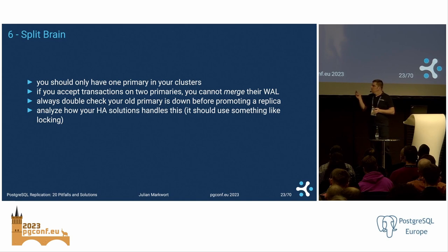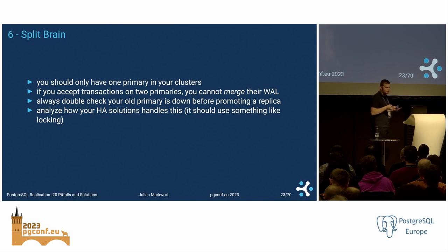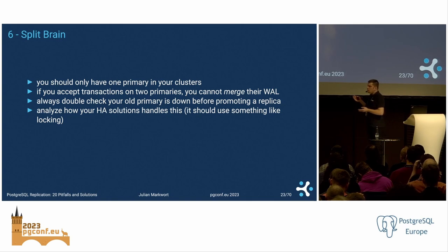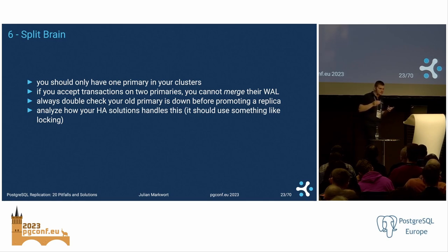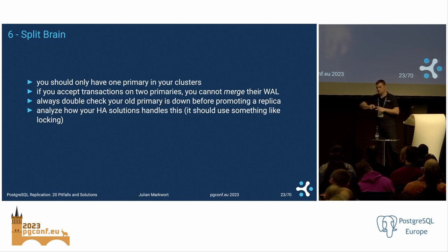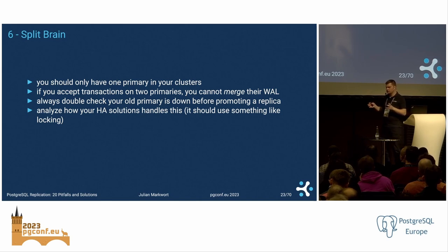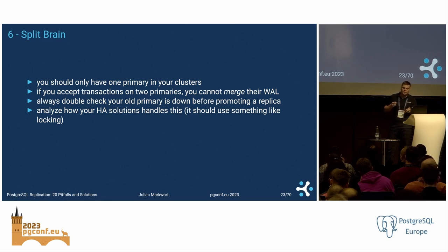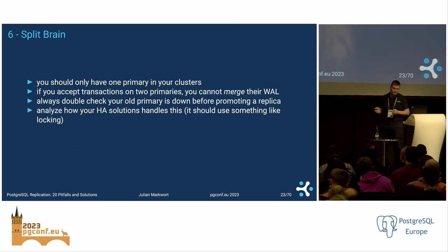You need to double-check that your primary is down before you promote your replica. Just because you cannot see the primary — because it's partitioned off in a data center — does not mean it's not still running as a primary and accepting local changes. Your high availability manager should use something like locking backed by a quorum: you can only promote if you acquire that lock, and any primary that loses or fails to extend its lease on the lock should shoot down the PostgreSQL instance to prevent split brain.